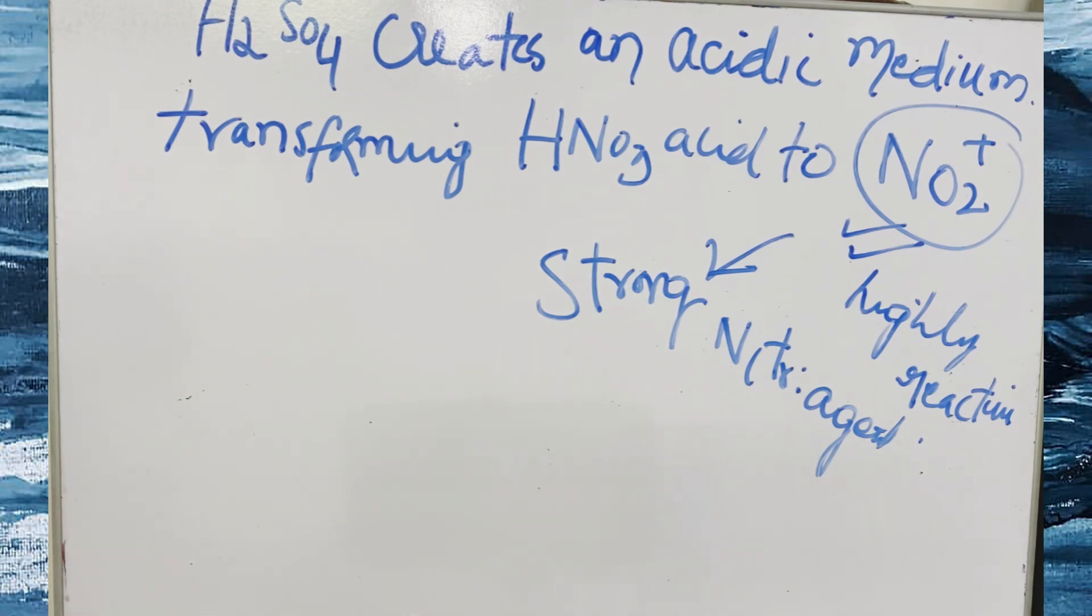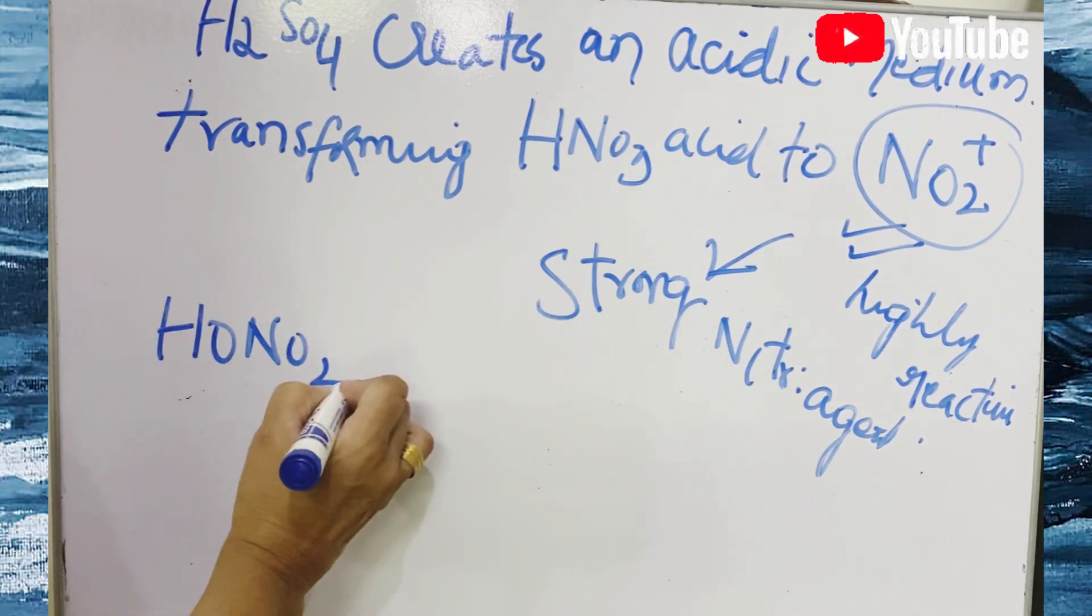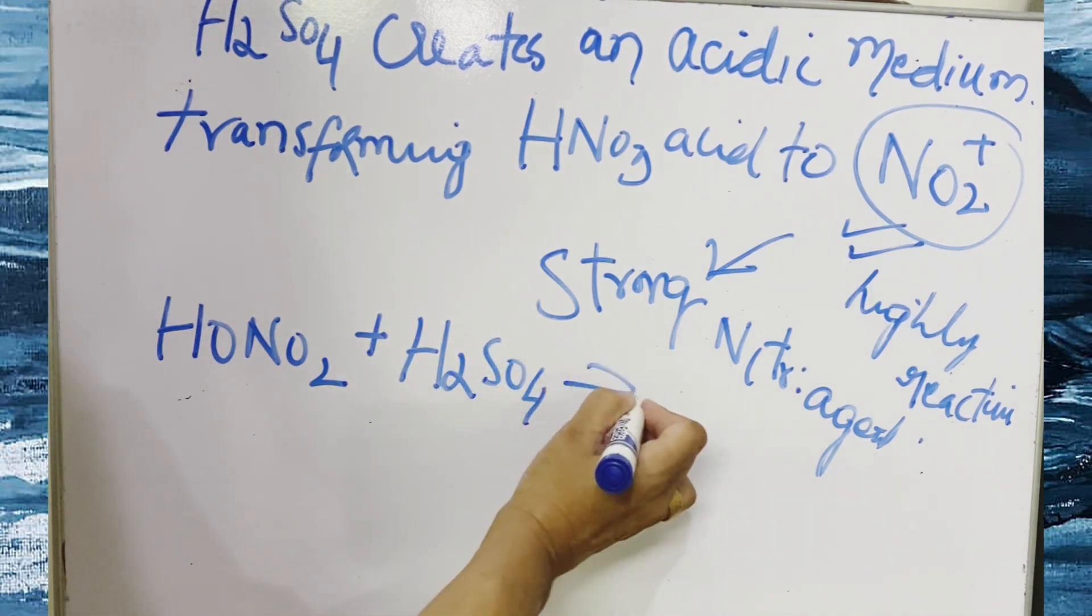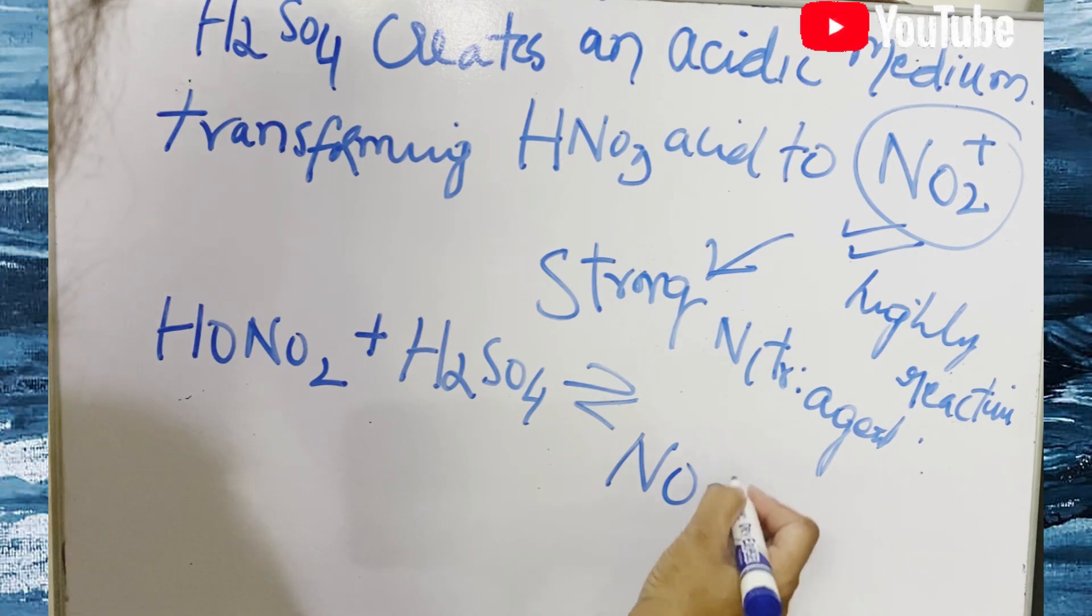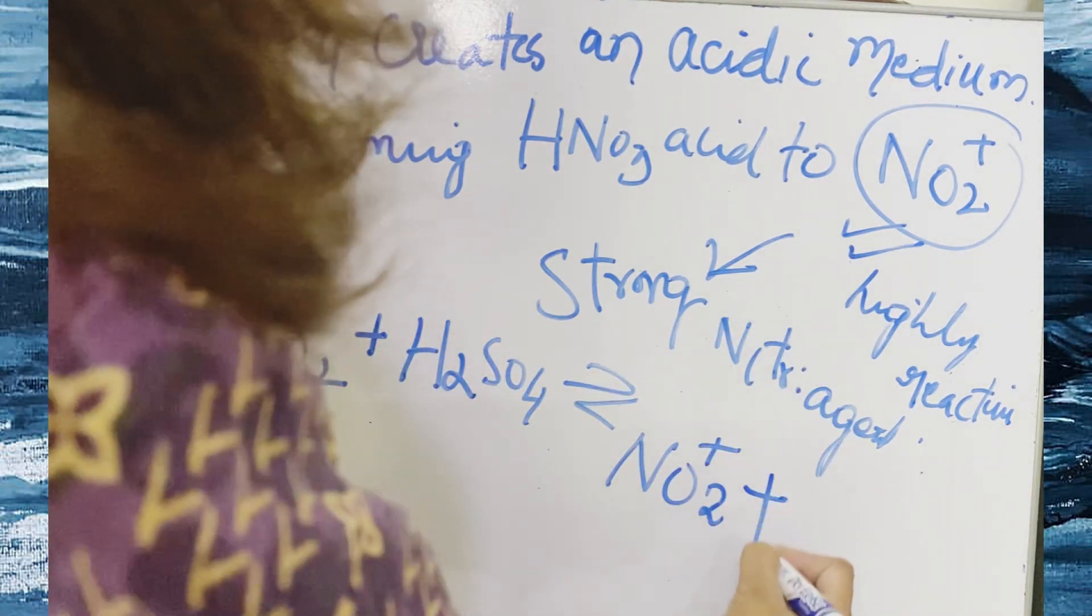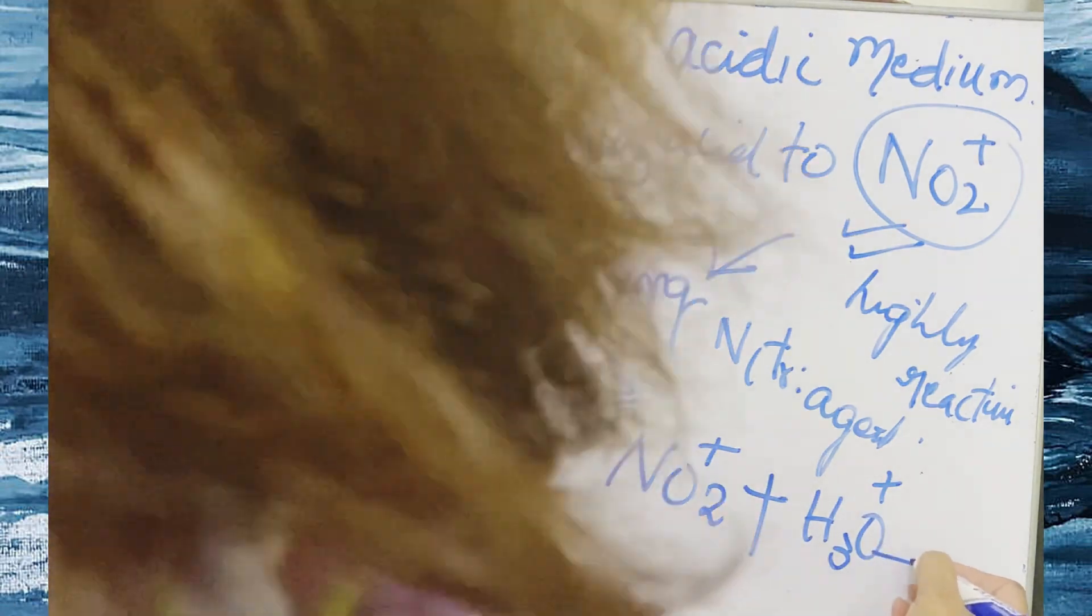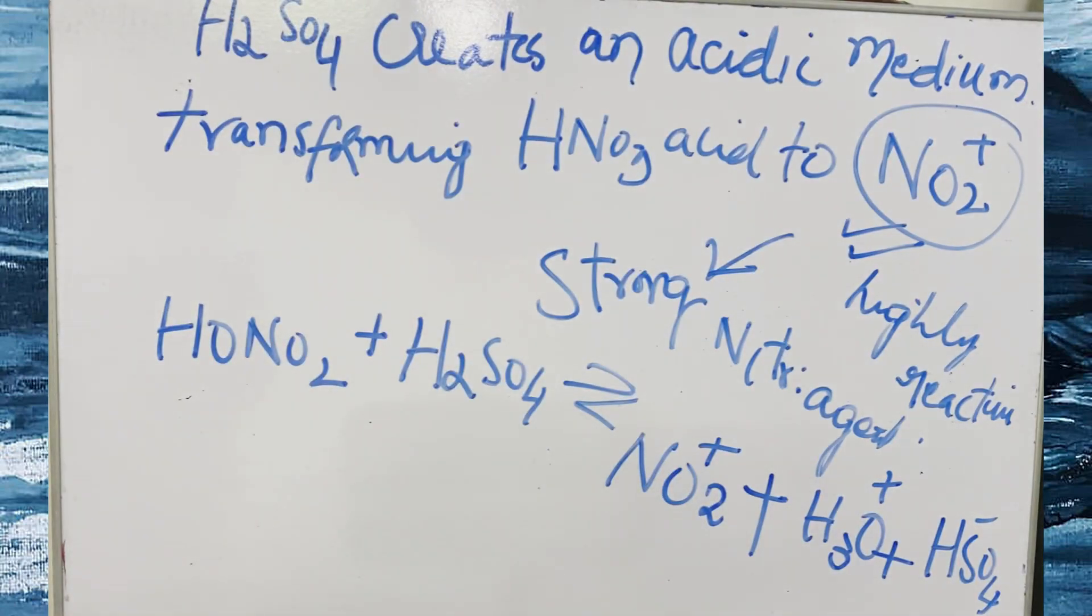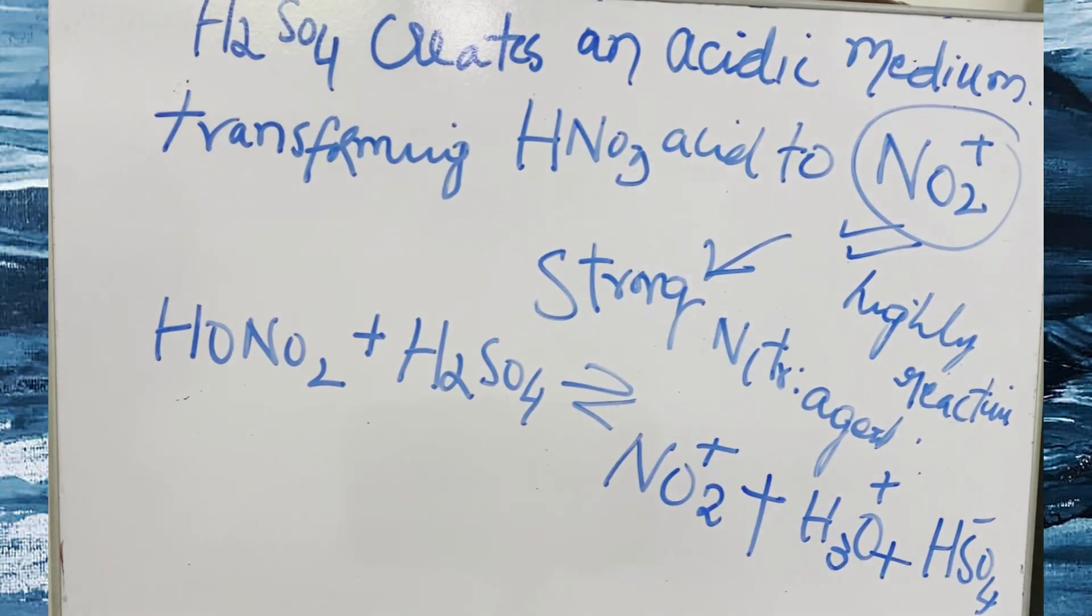So what the equation would be like: nitric acid plus sulfuric acid, the formation of a nitronium ion NO2+ plus a hydronium ion and a bisulfate ion HSO4-. This is the reaction. So nitronium ion is a strong electrophile and attacks the nucleophilic aromatic nucleus forming this carbonium ion. I will show you how this will happen in the next reaction.